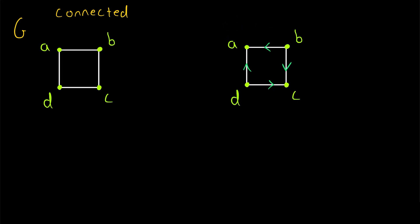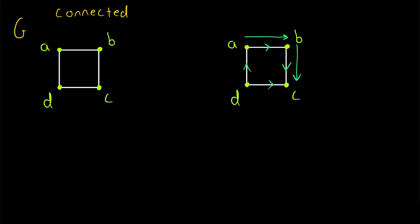Also interesting: if we change the direction on, say, this edge that joins A and B — let's change that direction so it goes that way instead — then we're able to travel from A to C. But there's no way to get from C to A, since the out-degree of C is equal to 0, so there's no way to leave C. There's no edge leaving C. All of this is to make the point that we're going to have to flesh out our definitions of connected a little bit when we talk about directed graphs.